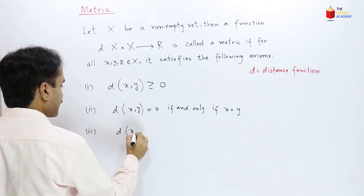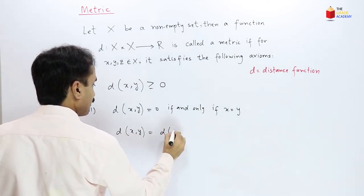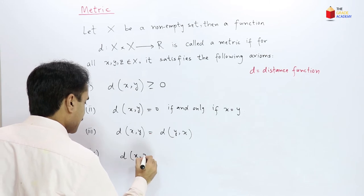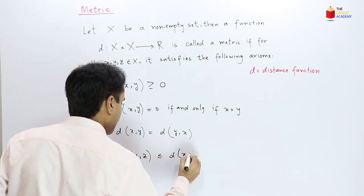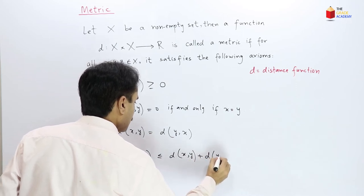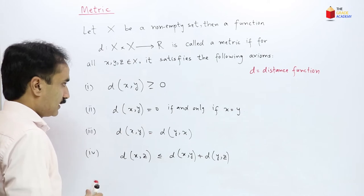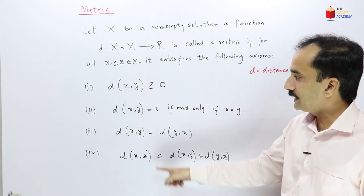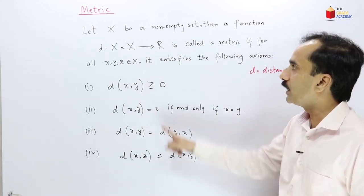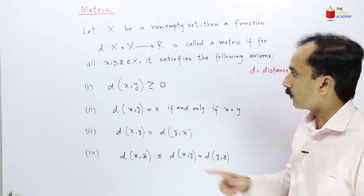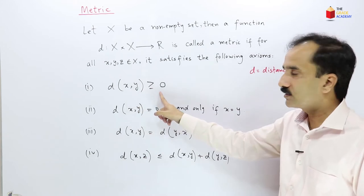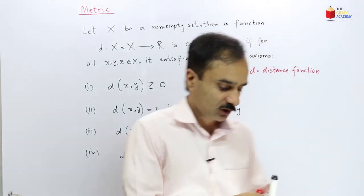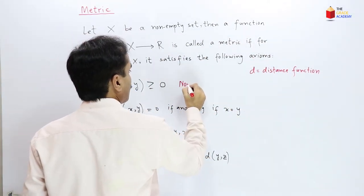Number 3: d(x,y) is equal to d(y,x). Number 4: d(x,z) is less than or equal to d(x,y) plus d(y,z). If the distance function satisfies these axioms, then it is called a metric on the set X. This first property means the distance function is always non-negative — this is the non-negativity property.